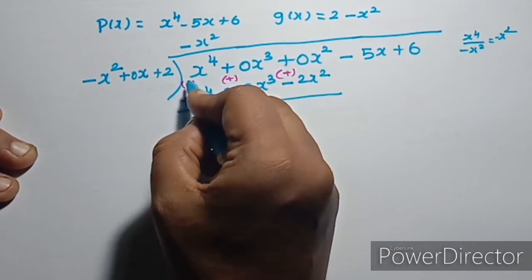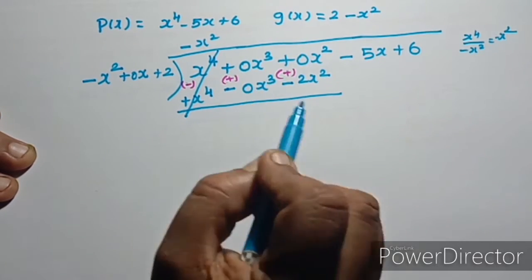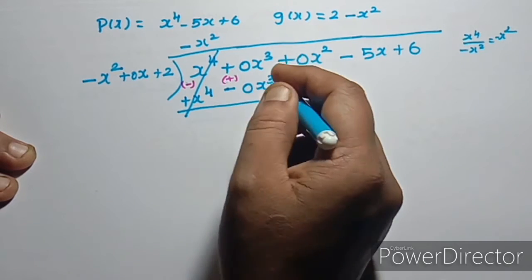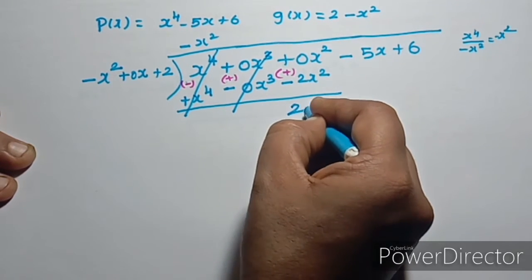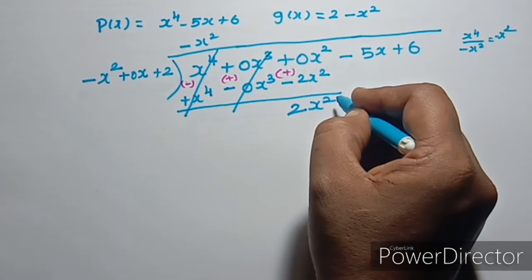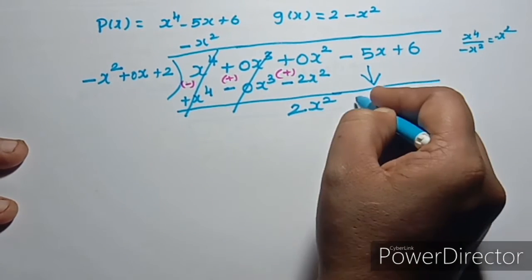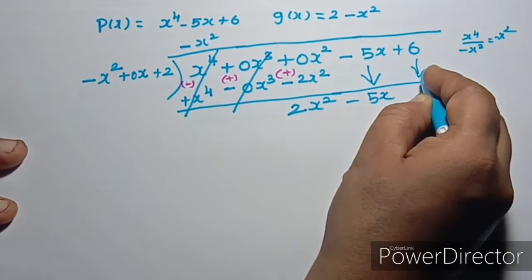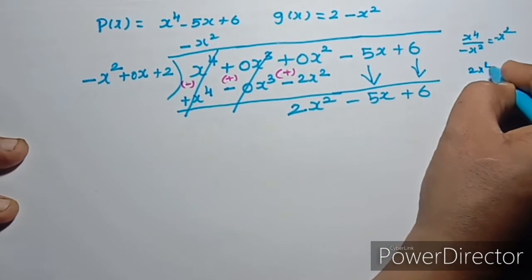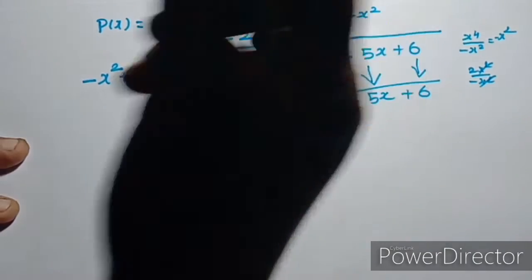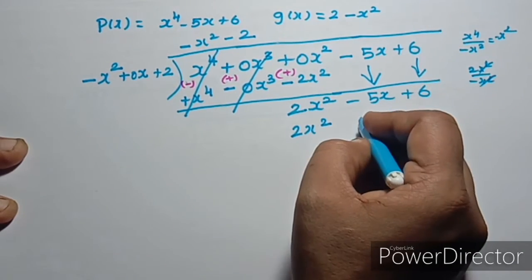Now x power 4 terms cancel. We bring down: 0x squared plus 2x squared gives 2x squared minus 5x plus 6. Next, 2x squared divided by minus x squared gives minus 2. The x squared terms cancel.